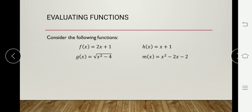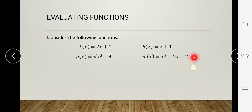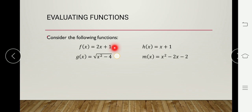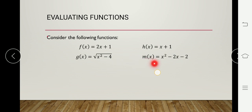From the functions given, we have f(x) = 2x + 1, g(x) = √(x² - 4), h(x) = x + 1, and m(x) = x² - 2x - 2. Functions can be denoted by any letters from the English alphabet. f(x) is an example of a linear function, and so is h(x), because the highest exponent is 1. g(x) is a square root or radical function because of the presence of a radical sign. m(x) is a quadratic function because the highest exponent is 2.